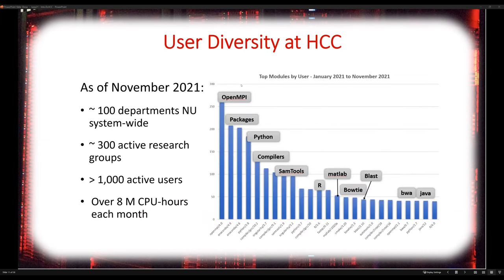As of November of last year, we serve over 100 departments throughout the Nebraska University system with over 300 active research groups and over 1,000 active users. Each month we average about 8 million CPU hours of research. We serve many software packages ranging from OpenMPI, Python, R, MATLAB, SAMTools, VASP, Java, and many others. On Crane we have about 1,400 different packages and software versions installed; SWAN is at a couple hundred right now since we didn't transfer all of them when we deployed SWAN.